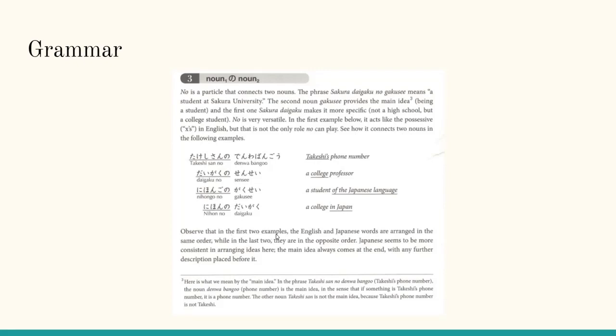Observe that in the first two examples, the English and Japanese words are arranged in the same order, while in the last two, they're in the opposite order. Japanese seems to be more consistent in arranging ideas here. The main idea always comes at the end, while any further description is placed before it.